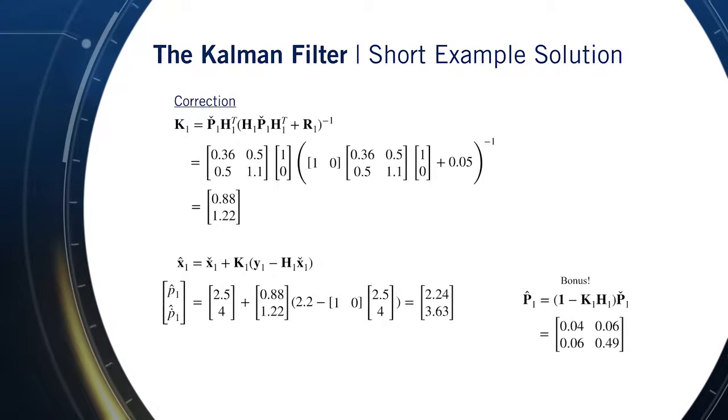Pay attention to the fact that our final corrected state covariance is smaller. That is, we are more certain about the car's position after we incorporate the position measurement. This uncertainty reduction occurs because our measurement model is fairly accurate.